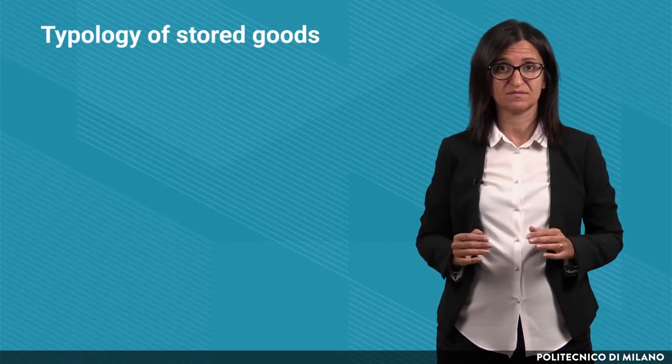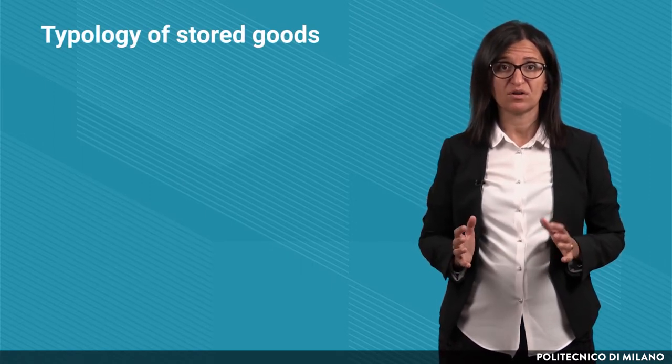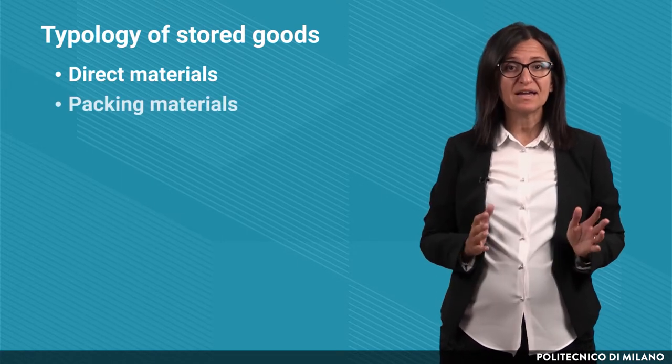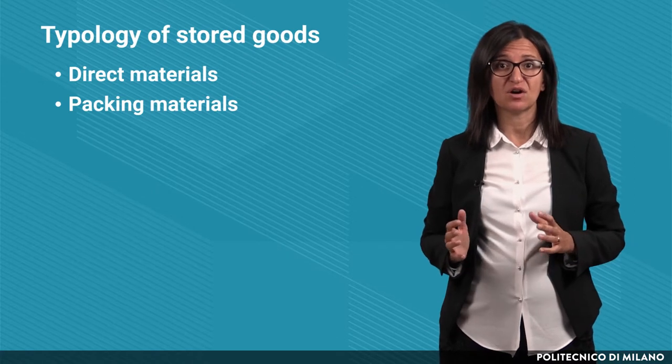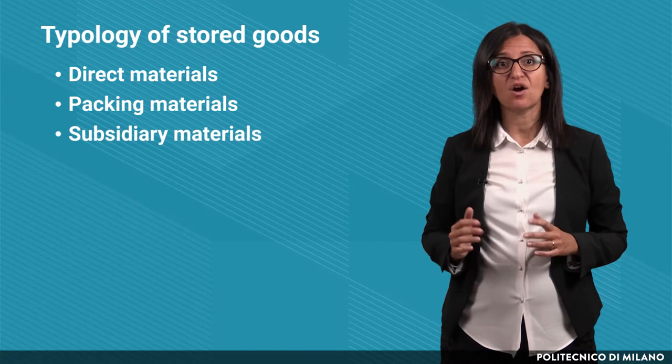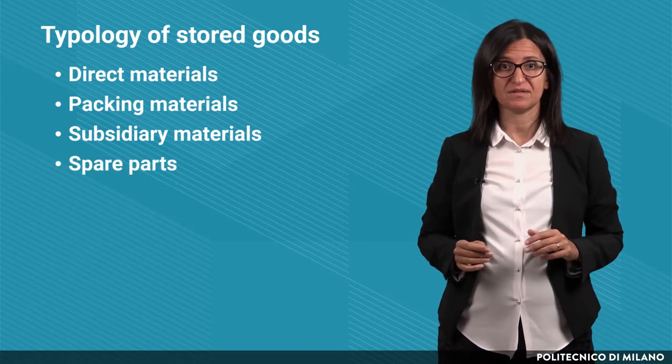Up to now, we have classified inventories on the basis of their main role, that is efficiency or effectiveness. A second classification is based on the typology of stored goods. We distinguish among direct materials that are used to make the product, packing materials like cardboard and bottles, subsidiary materials like oil for production machines, and spare parts.